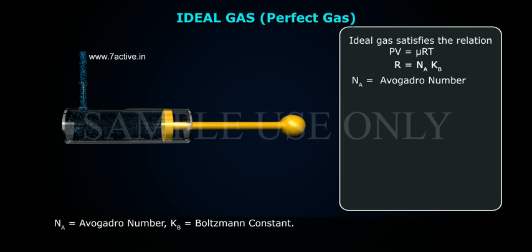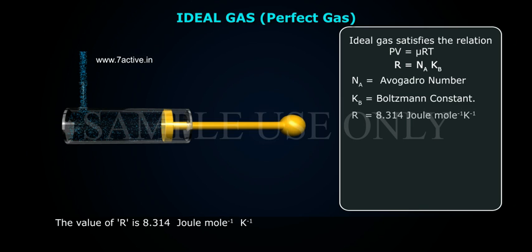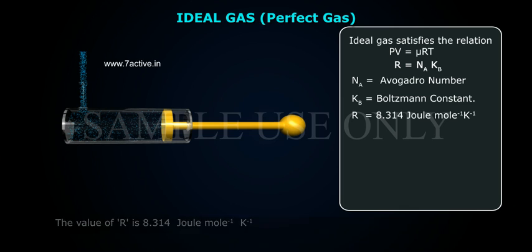Na is the Avogadro number and KB is the Boltzmann constant. The value of R is 8.314 Joule mol⁻¹ K⁻¹.